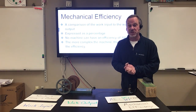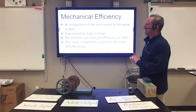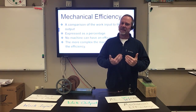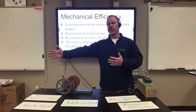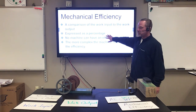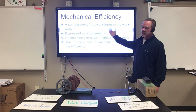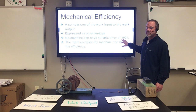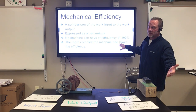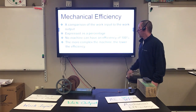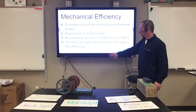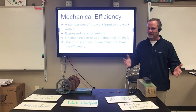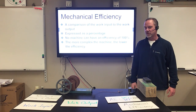Mechanical efficiency is a comparison of the work input to the work output — it gives us an idea of how well we're converting work from one side to the other, and it's expressed as a percentage: 100%, 75%, 80%, and so on. No machine can have an efficiency of 100% because there's always a little bit of friction that causes you to lose some work. The more complex the machine, the lower the efficiency — things like automobiles are down to 10 to 20 percent, very low efficiency for those complicated devices.